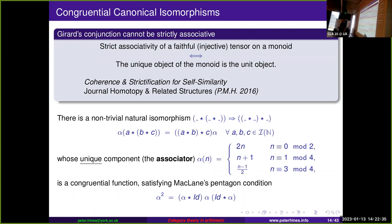It satisfies MacLane's pentagon condition — more on that later. We have congruential functions arising from the geometry of interaction, and we can do something not commonly done: ask Collatz-like questions about this associativity isomorphism.